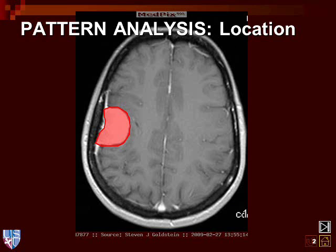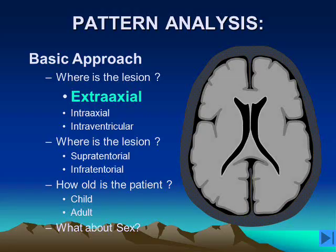After we give contrast material, we can see on this T1-weighted MR image that the lesion is enhancing, and there is also enhancement of the dura underneath the hemispheric-shaped lesion. So we have a classic extra-axial mass lesion.